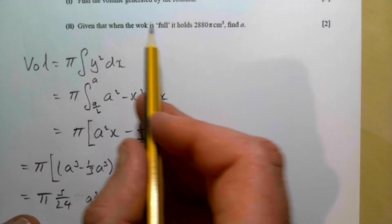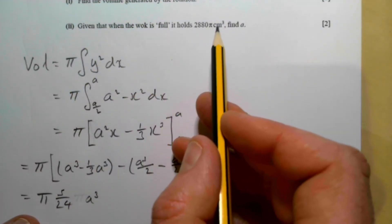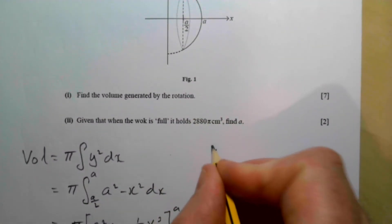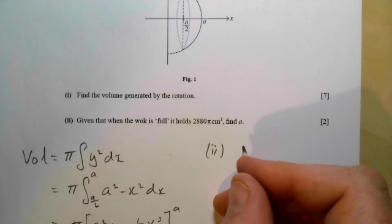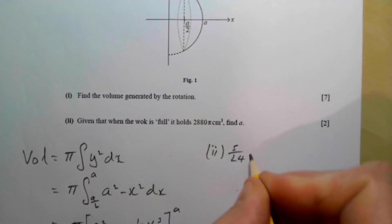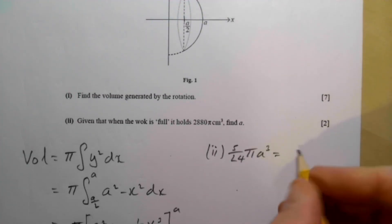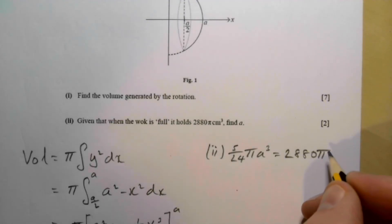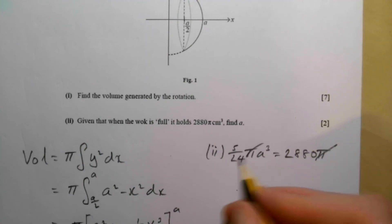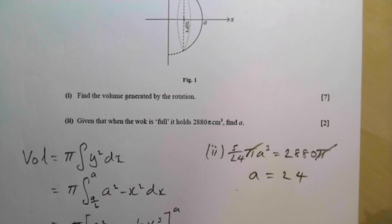Part 2 is, given the wok is full, it holds 2880 pi centimeters cubed. Find the value of a. That means we know that 5 over 24 pi a cubed equals 2880 pi. The pi's cancel. We times by 24 and then divide by 5. And then we find the cube root. If you find the cube root, you get a equals 24.